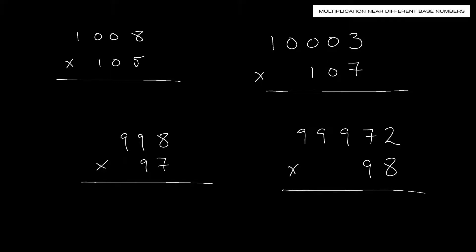Good day. Let's do some multiplication near different base numbers. In these problems we're working with base number 1,000. Here we have 1,008 times 105 — these are two different base numbers. 1,008 is close to base number 1,000, and 105 is close to base number 100.